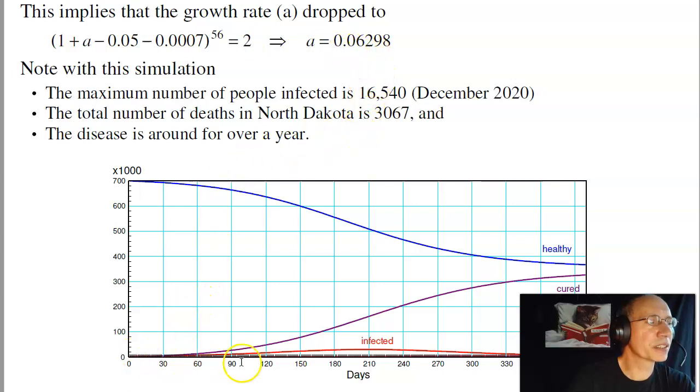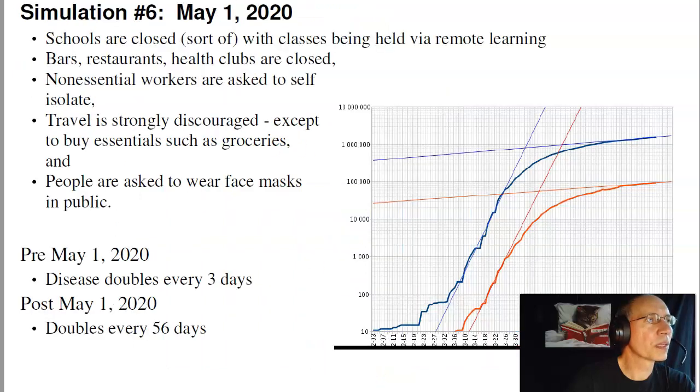Again, we still have a slight outbreak, much, much better than it was before. I only have 3,000 dead rather than 10,000. And the maximum number of people ever infected in North Dakota would be 16,000. So that's the world as of May 1st.